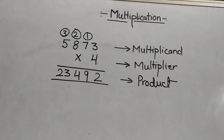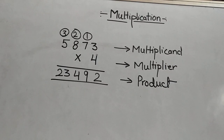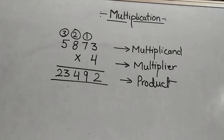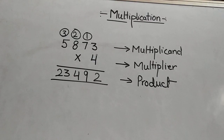This is a very simple question. Children, you need to be thorough with your tables. You need regular practice of the tables at least till 20. This was the example with a 1-digit multiplier.